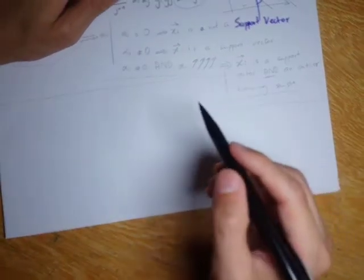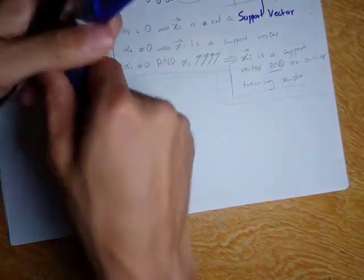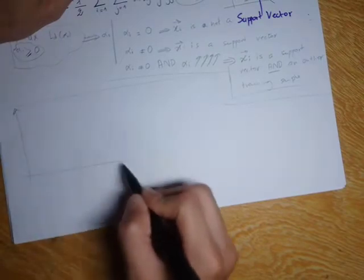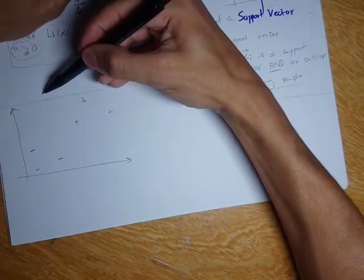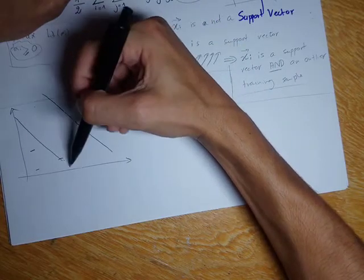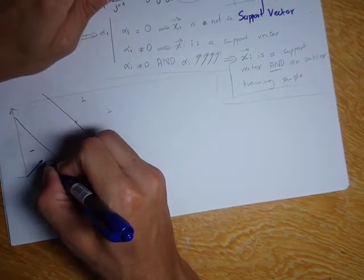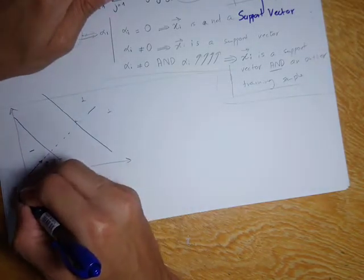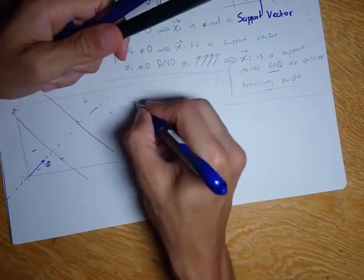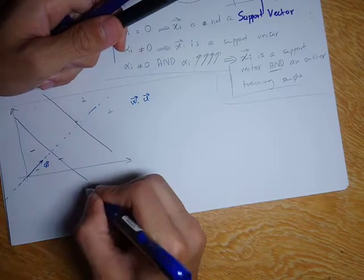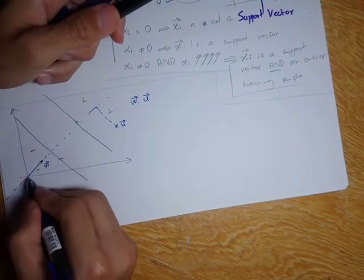If you remember, in the beginning I said that b equals minus c. To find b we need to find c. I'll draw the feature space: here are positive samples, negative samples, and the margin with the weight vector w found after optimizing. The dot product of this vector w with any unknown point gives a measure of distance from that point to the decision boundary.